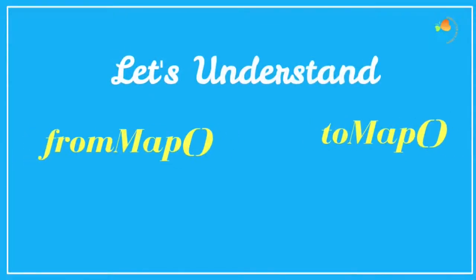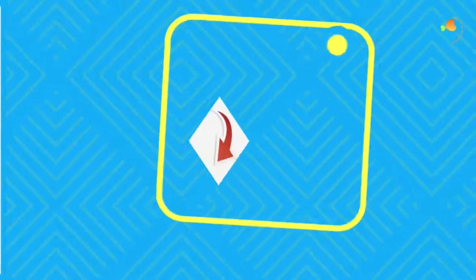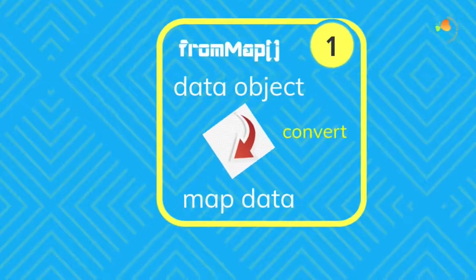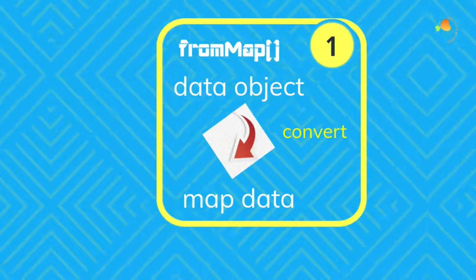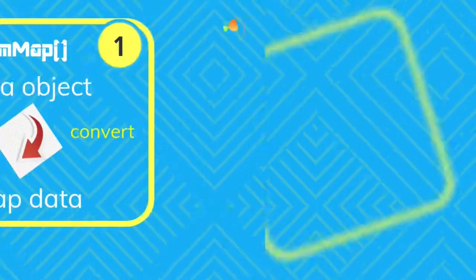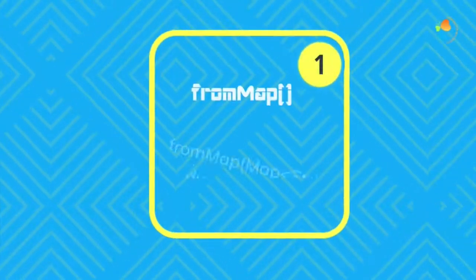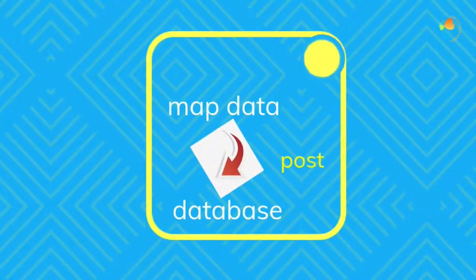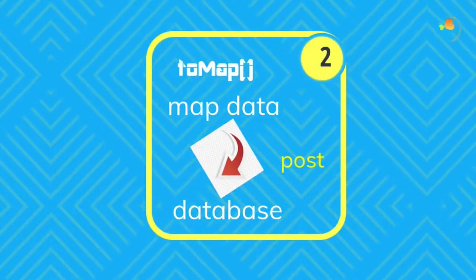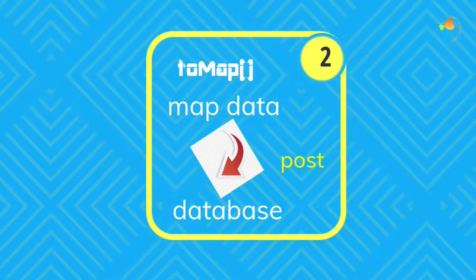Let's understand what fromMap and toMap are. If you have a data object and you want to convert that data object into map data, you have to do it like this. And whenever you want to post something into a database, API, or server, you have map data so you can post it like this.